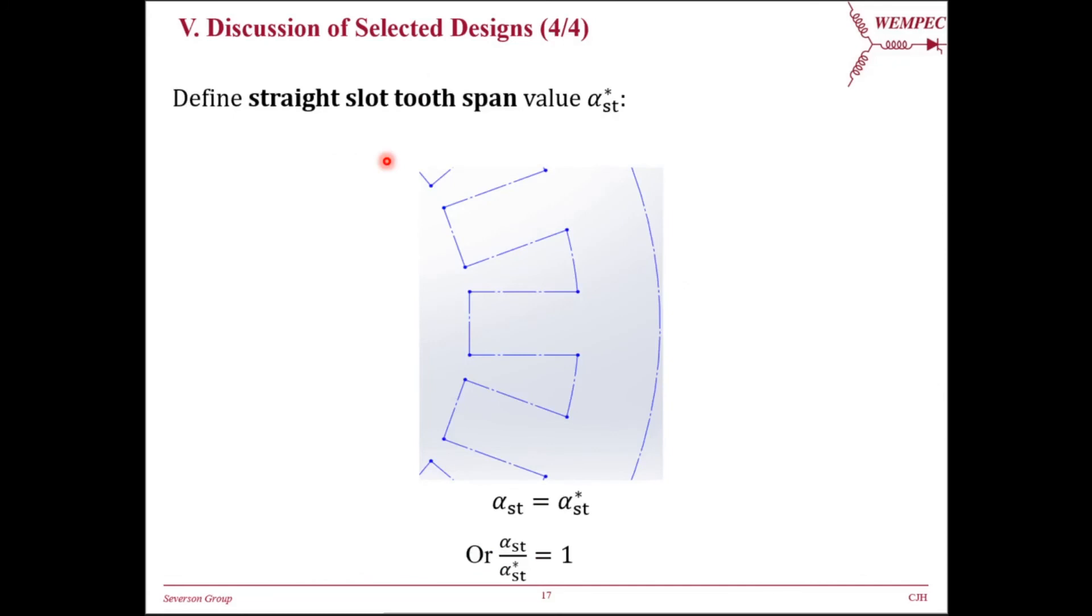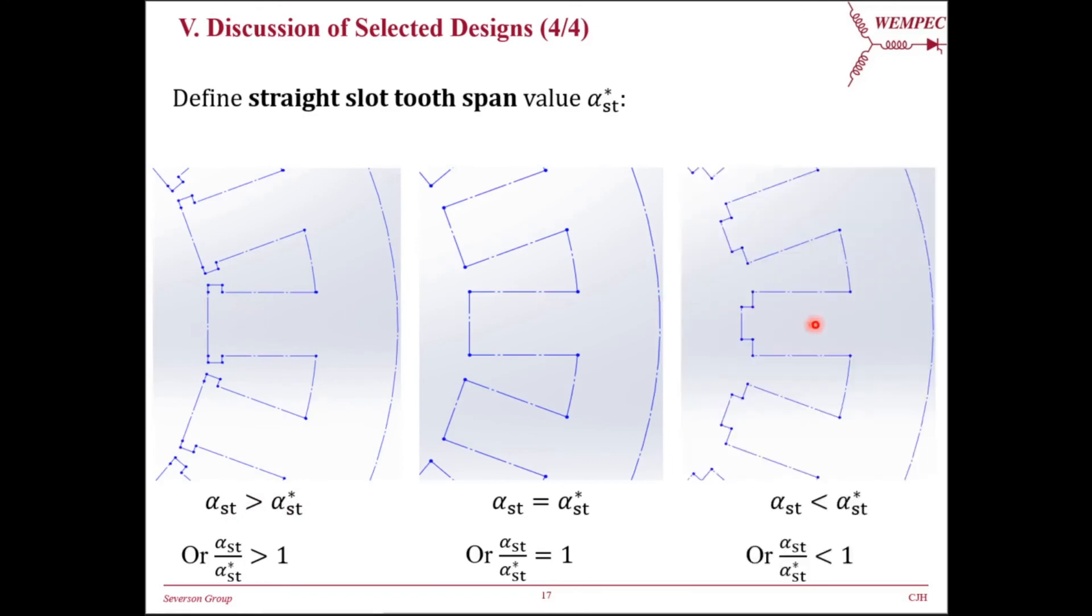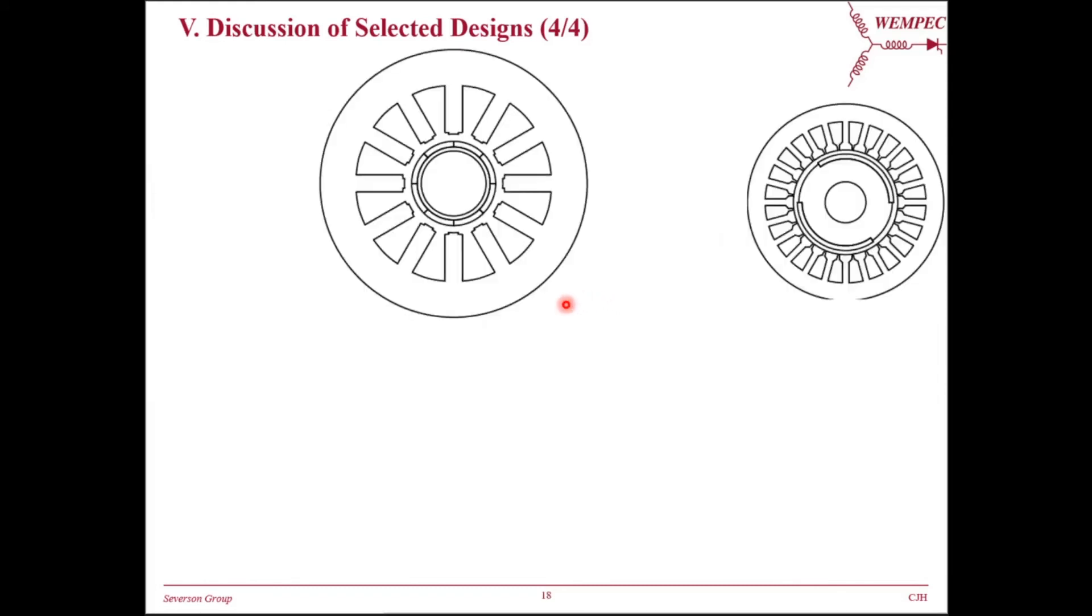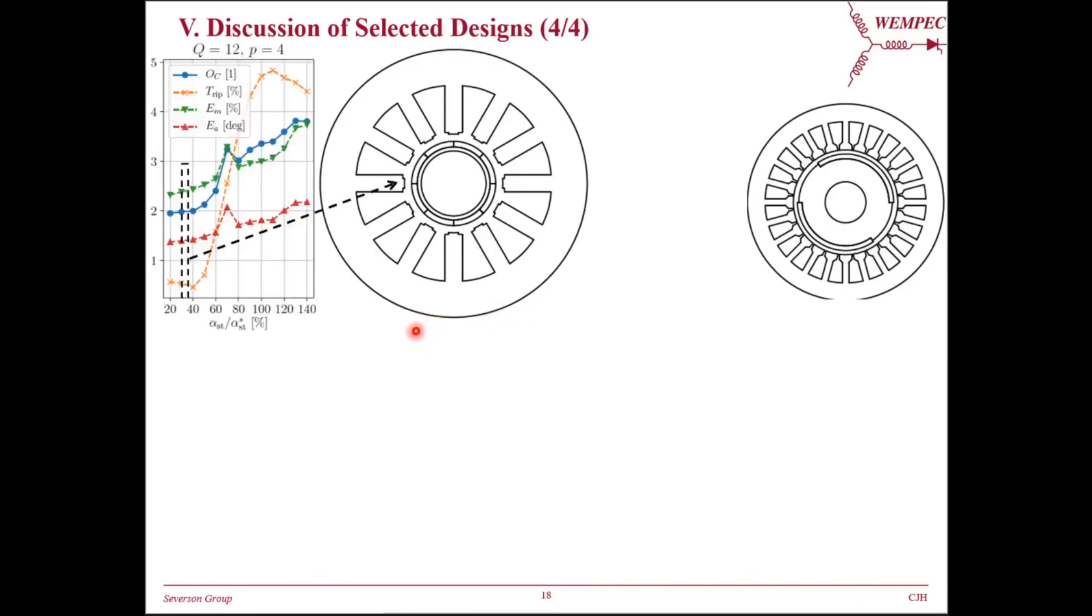But before we dive into analysis, let's first define a variable denoted as alpha-st star. This is a straight slot, and its tooth span value alpha-st is defined as alpha-st star. If the tooth span value alpha-st is larger than alpha-st star, we would have a semi-closed slot shape. Otherwise, we would have a pointed tooth shape if alpha-st value is smaller than alpha-st star.